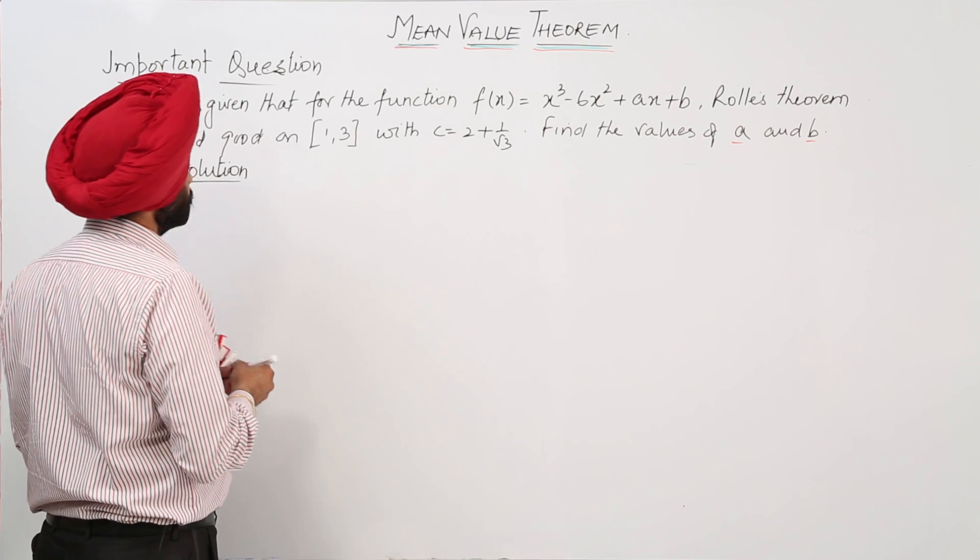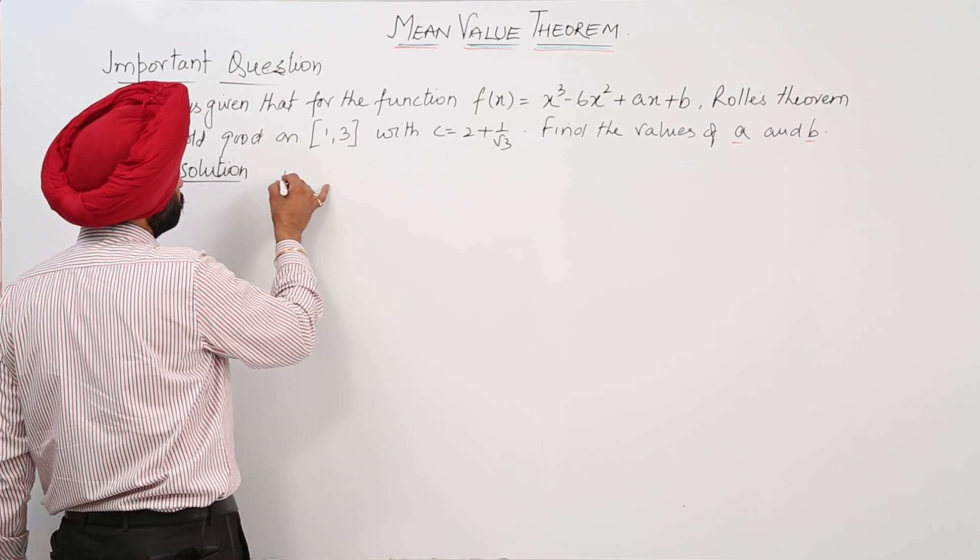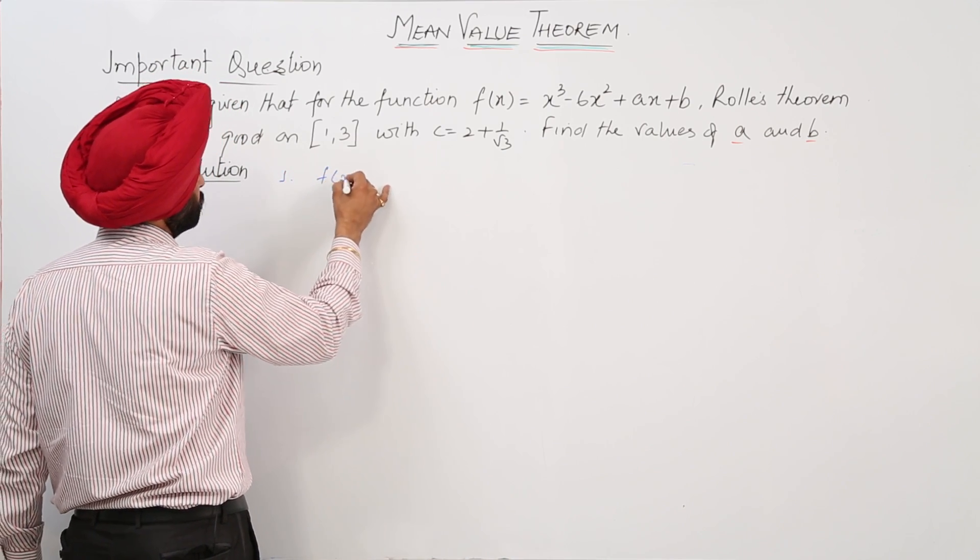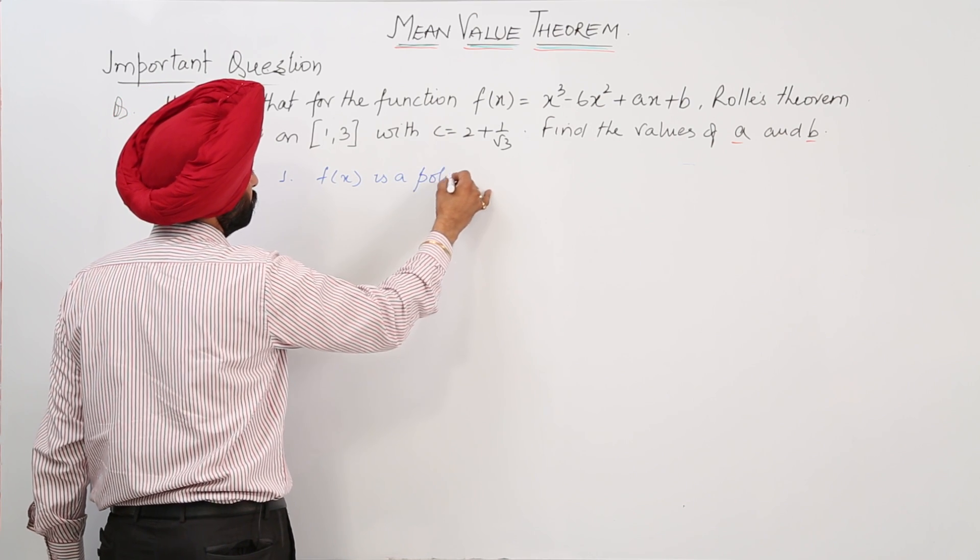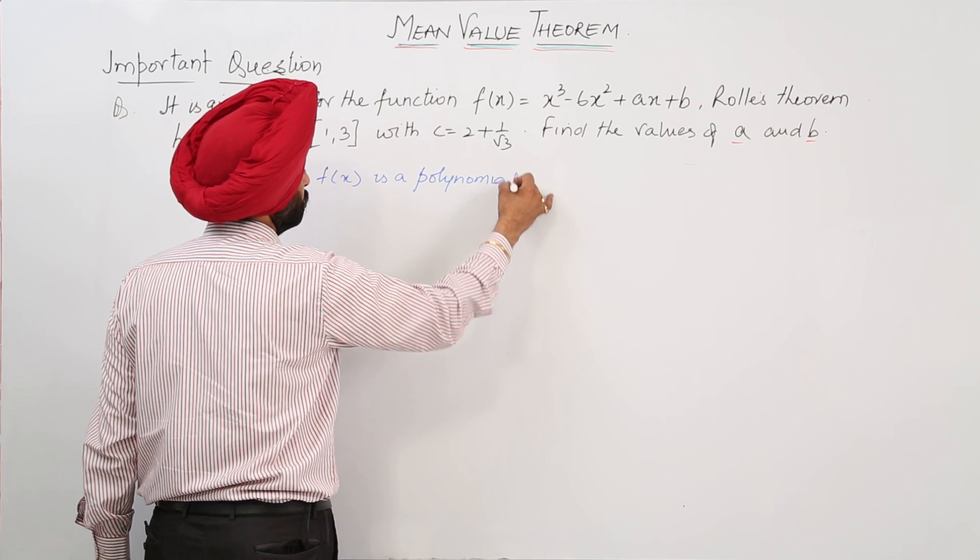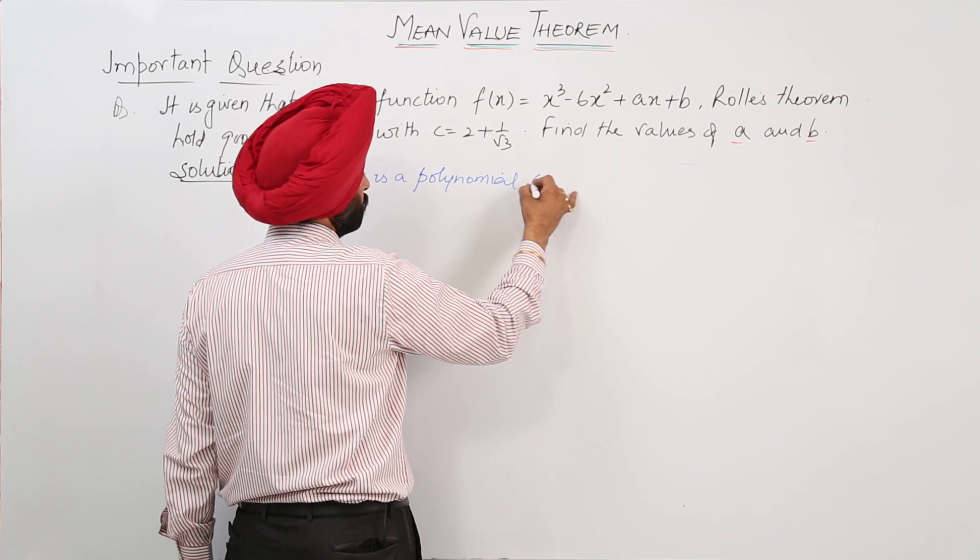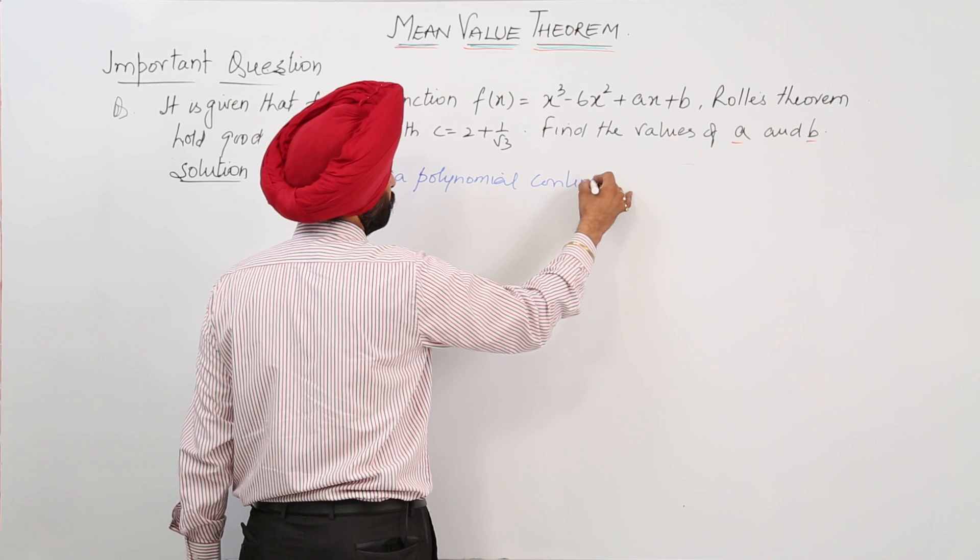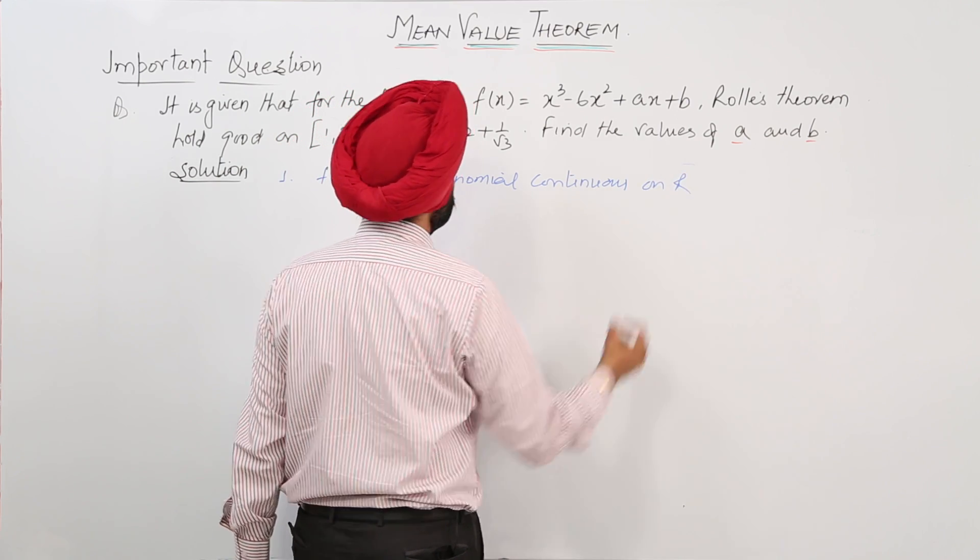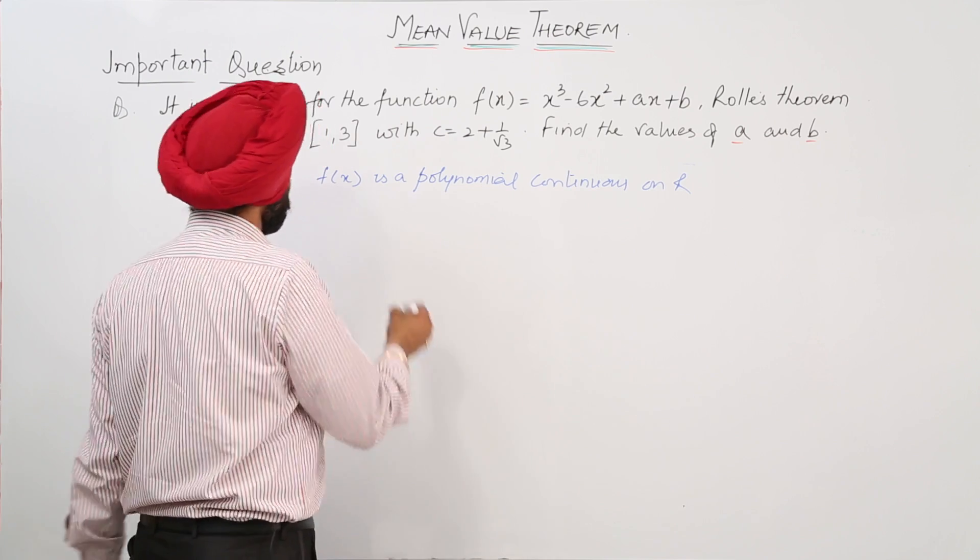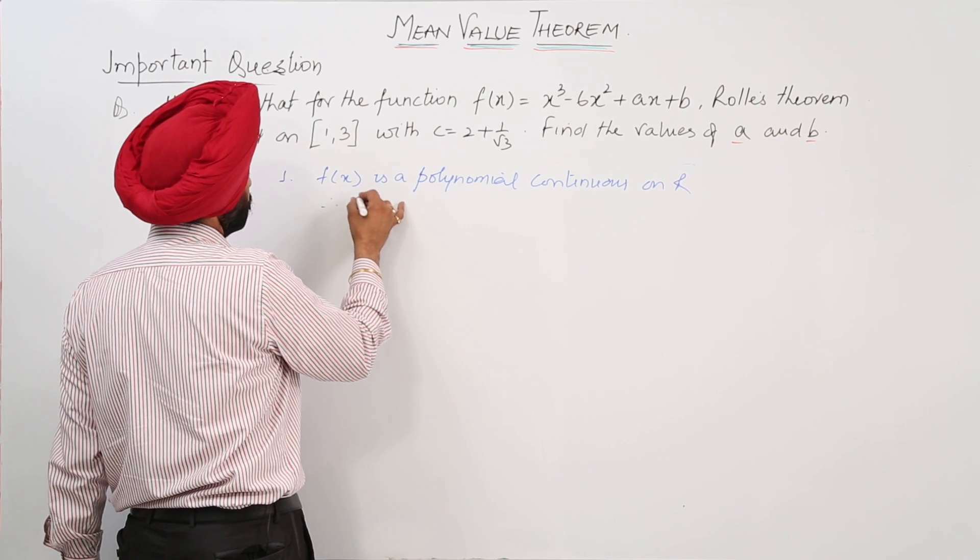Step number 1 for the continuity: f(x) is a polynomial. Continuous on R, polynomial is continuous on R. Therefore, in particular case...